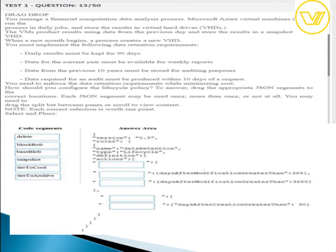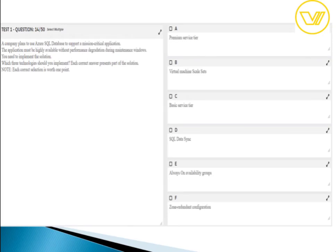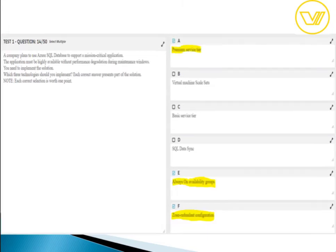For question thirteen regarding storage tiers: if days after last modification is greater than 365, use the archive tier. If greater than 10 years, use the delete option. If greater than 90 days, use the cool tier. These are the blob storage lifecycle options — hot, cool, cold, and archive — that you can configure.